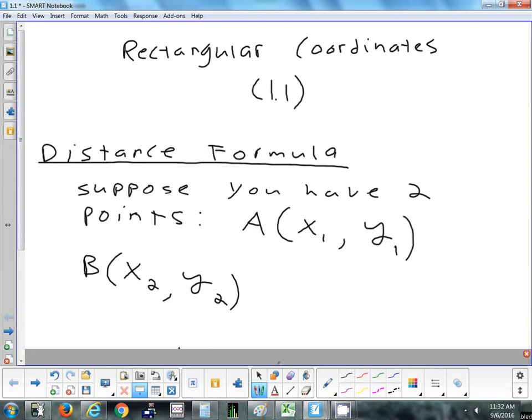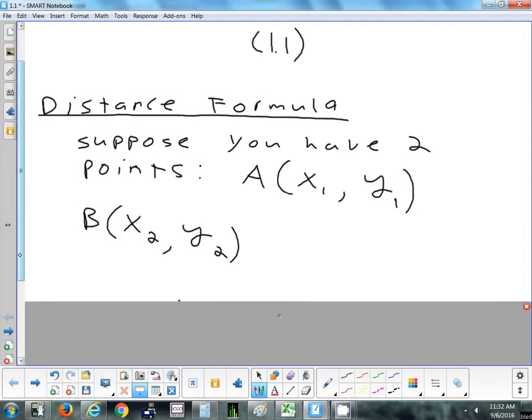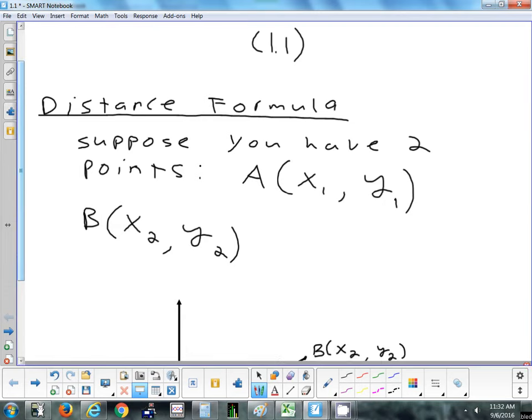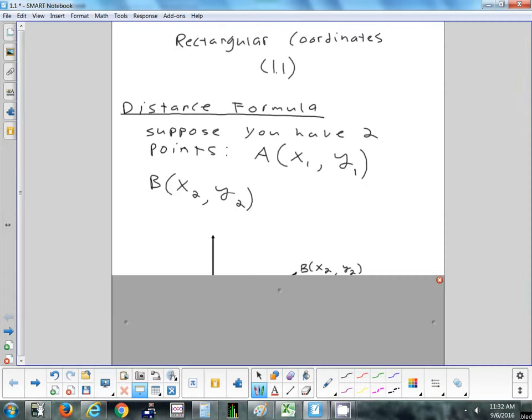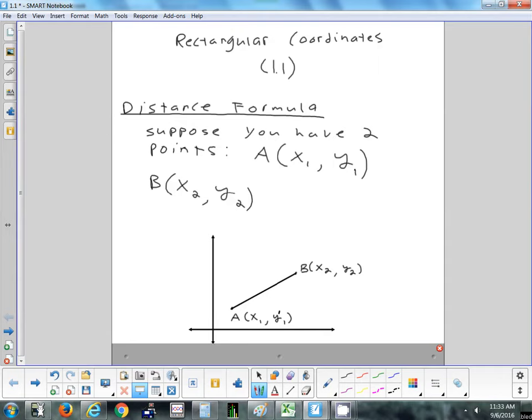In our distance formula, generally they give you two points. I'm going to call those points A and B. Point A has the coordinate (x₁, y₁), and point B is (x₂, y₂). It's just generic coordinates, and I've drawn it out below. To keep it visually simple, I'm going to put it in quadrant one.